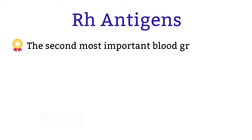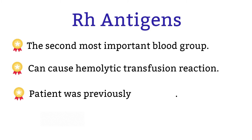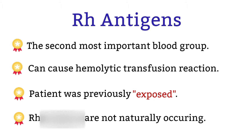RH blood group is the second most important blood group system in terms of transfusion. This is because the RH antigens are very immunogenic and capable of causing hemolytic transfusion reactions. When the patients have been exposed to non-self RH antigens, the patients are likely to produce antibodies against those antigens. These antibodies are capable of initiating an immune response. The keyword here is 'exposed' — the patient has to be exposed to the non-self RH antigens in order to make antibodies against it. Therefore, RH antibodies are not naturally occurring antibodies, unlike the anti-A and anti-B in ABO blood group antigen.